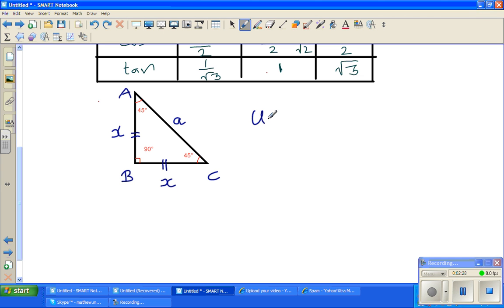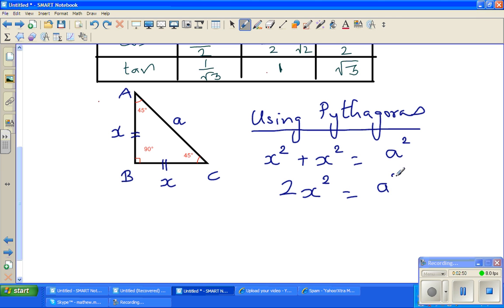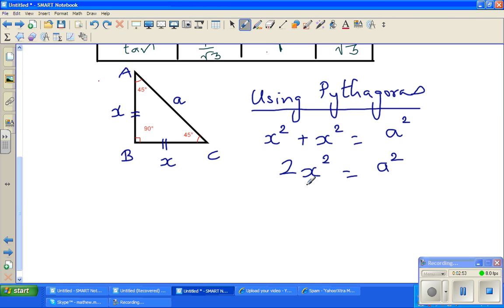Now using Pythagoras, using Pythagoras theorem, can I say X squared plus X squared is equal to A squared. So this is 2X squared is equal to A squared. So now if you divide both sides by 2, X squared is A squared over 2.